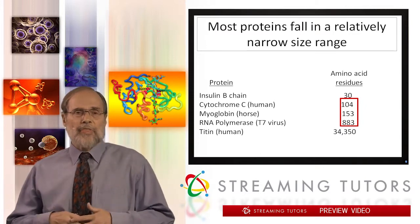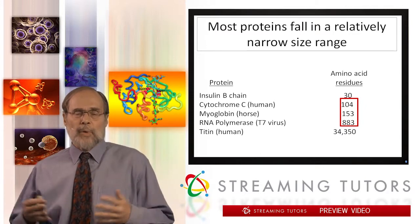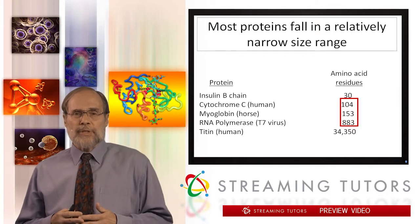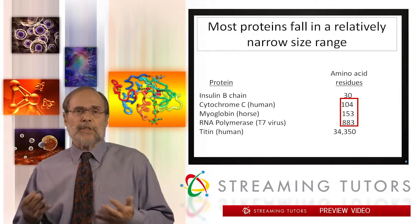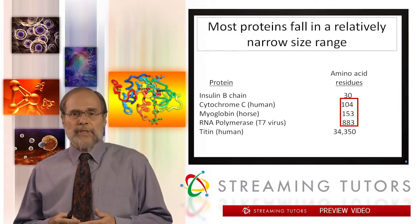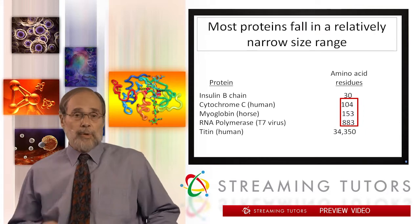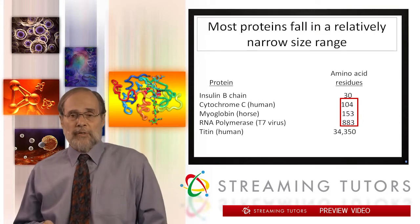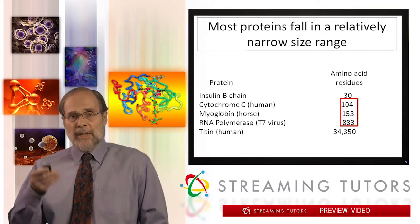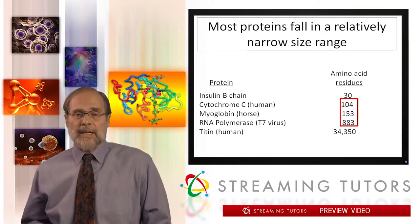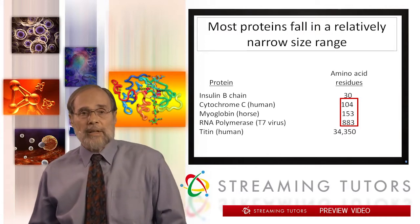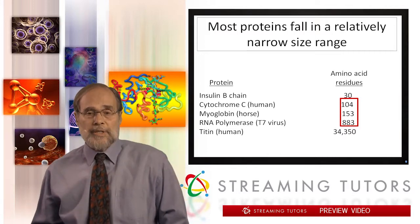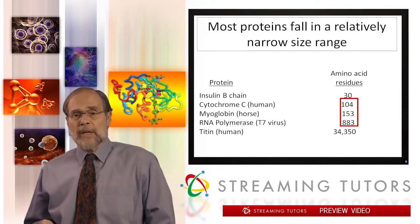Of the thousands — over 20,000 genes that exist in the human genome, for example — the vast majority of those proteins are in this range of 100 to 1,000 residues. And in this segment and the next couple of segments, we're going to be looking predominantly at proteins of that sort.